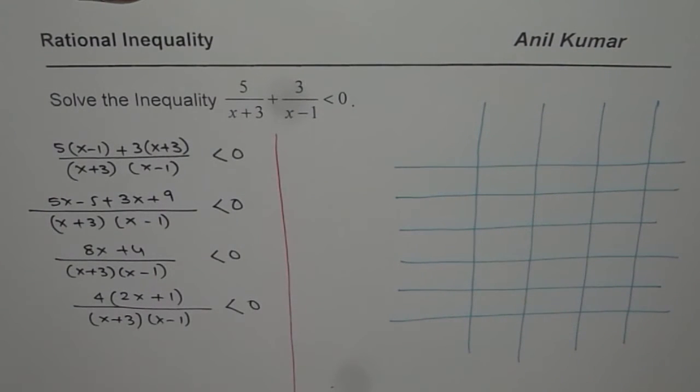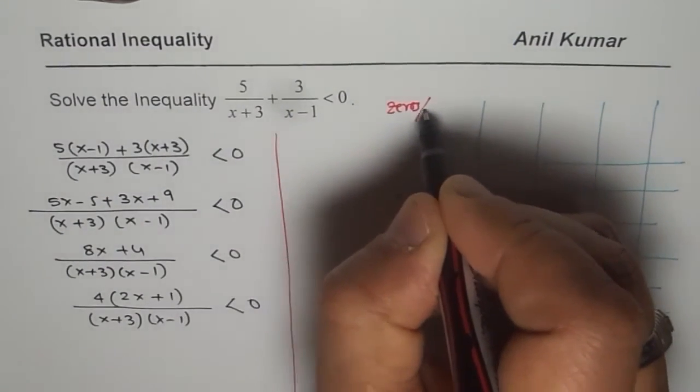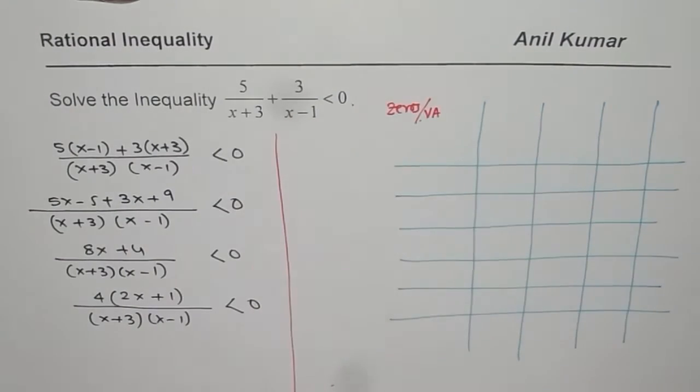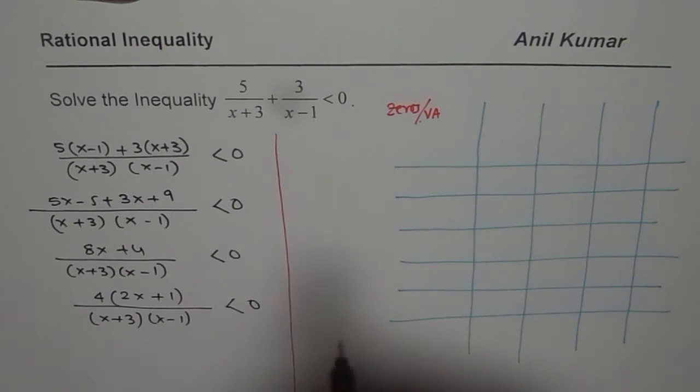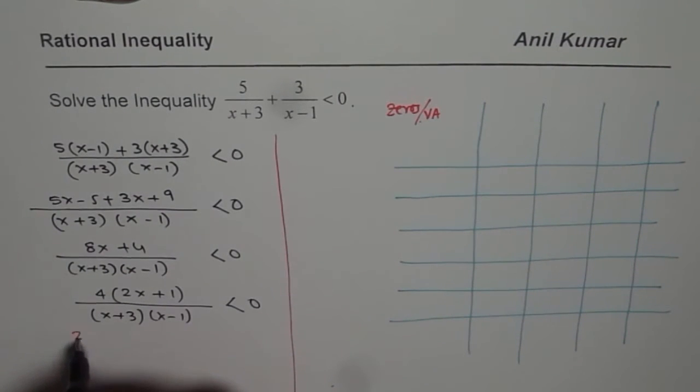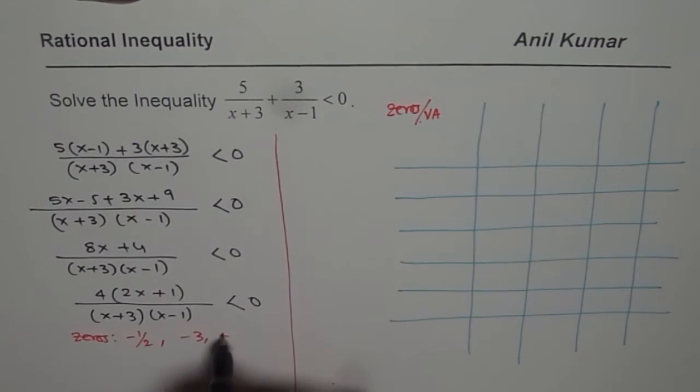One of them will be in the numerator and 2 of them will be in the denominator. The zeros for us are, let us write down the zeros first. When I say zeros or you can say vertical asymptotes, zeros of numerator and denominator. Of the numerator it is minus half and of the denominator minus 3 and plus 1.